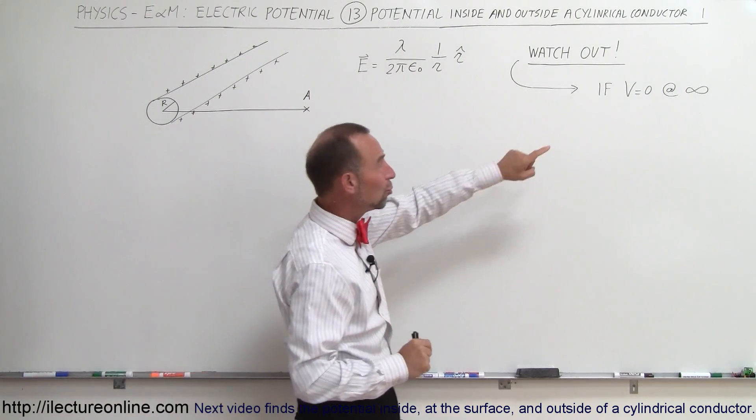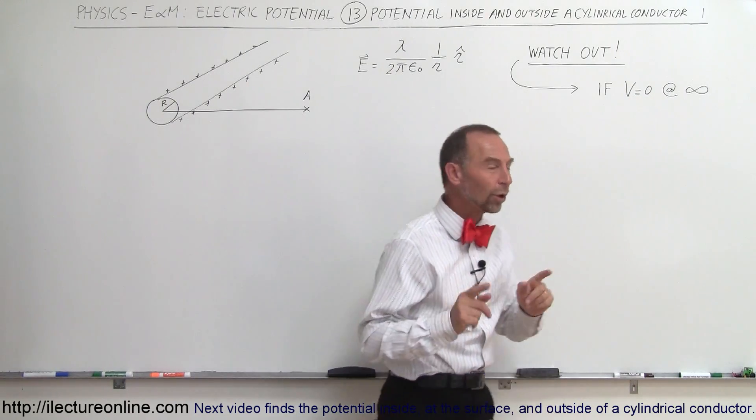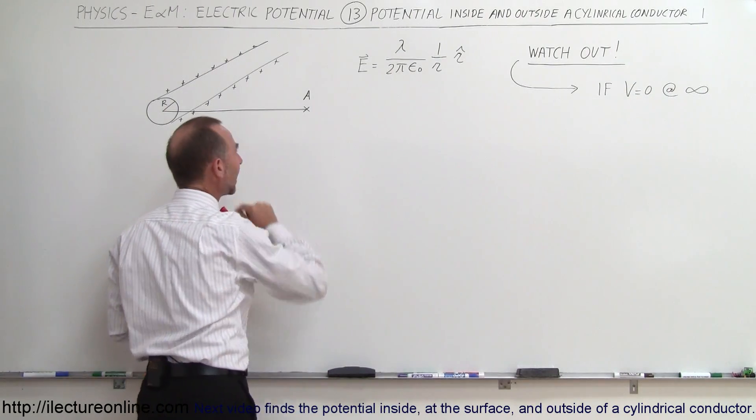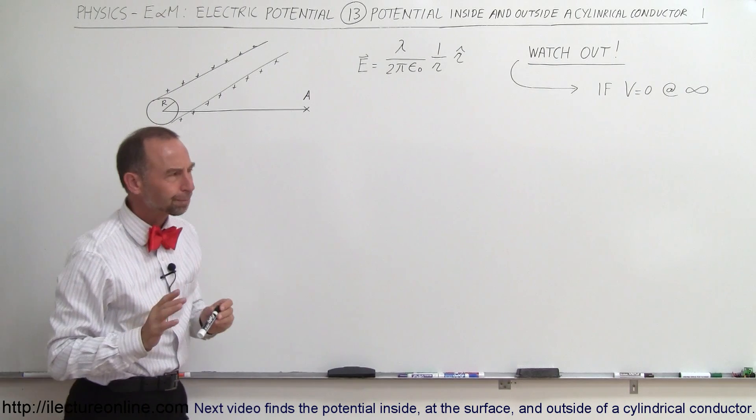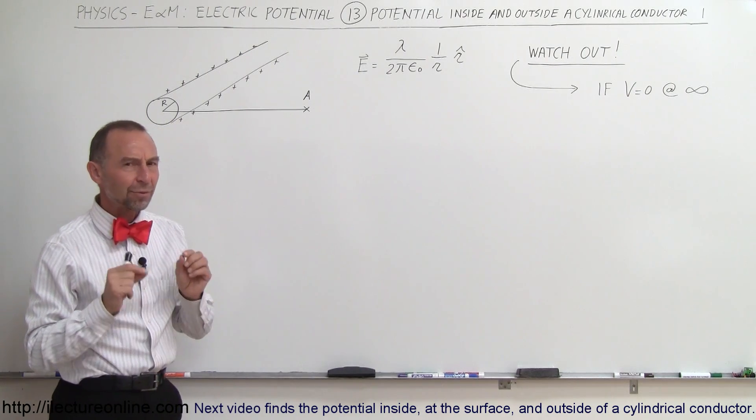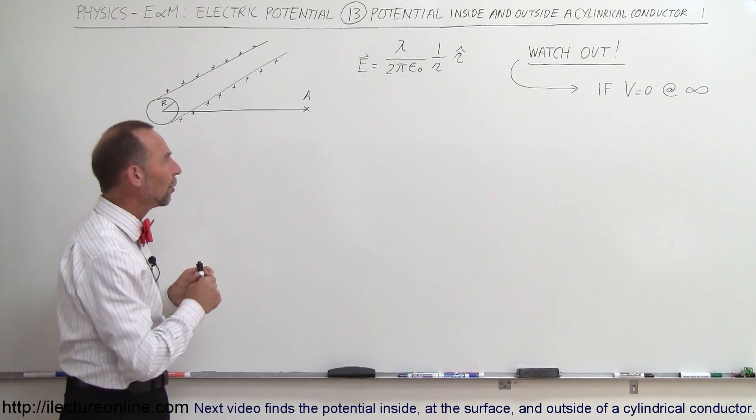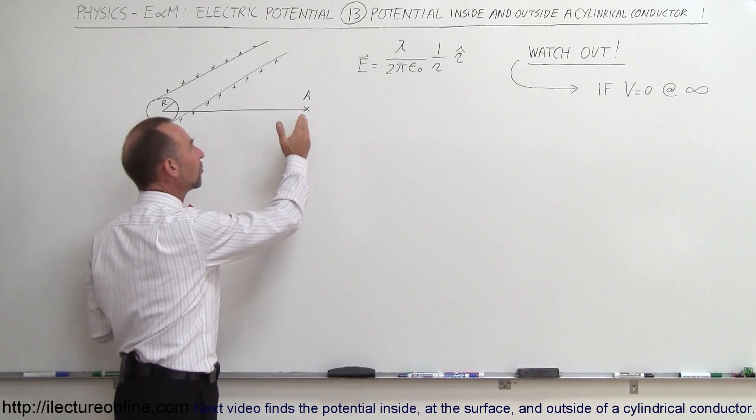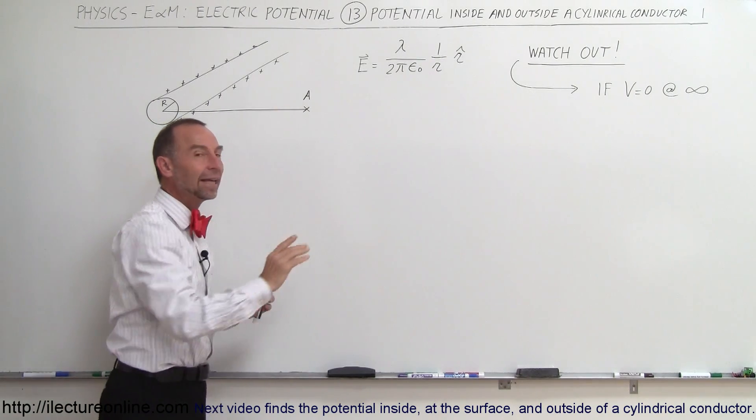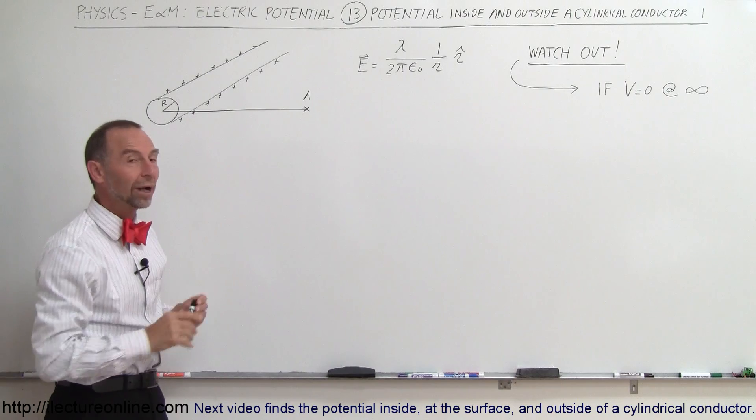Watch out for what? Well, if we assume that the potential equals zero at infinity, what do you think the potential will be nearby the cylinder? Well, we have a problem if we assume that. So with the cylinder, we kind of have to take a reference point somewhere else besides infinity, and I'll show you in this video why that's the case.